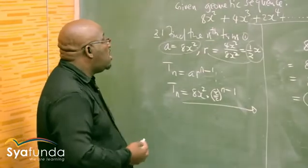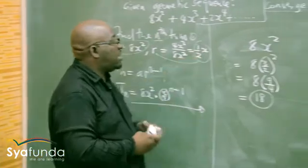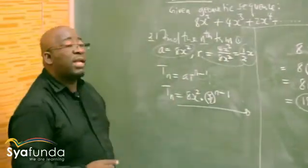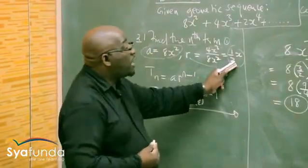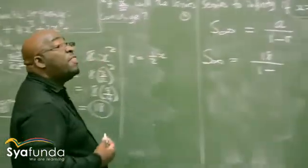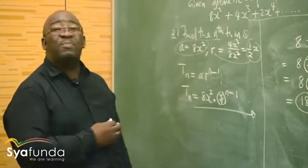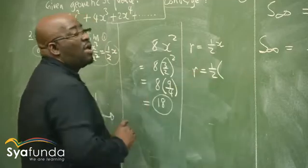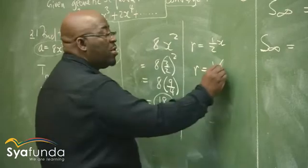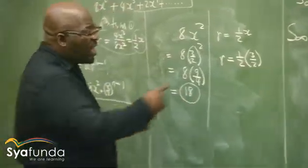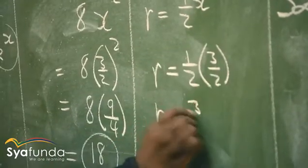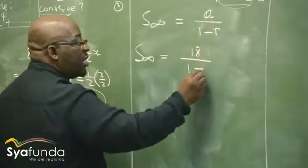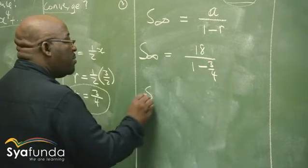Now we need to find our common ratio. Our common ratio is half of x. We got our common ratio as r equals half of x. But question 2.3 has given us the value of x as 3 over 2. Wherever we have x, we push in 3 over 2 to get the actual common ratio. Our common ratio will then be one half times 3 over 2, which is 3 over 4. So we have 18 over 1 minus 3 over 4.